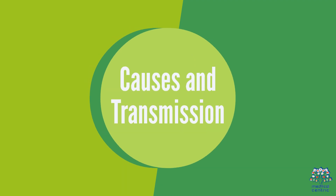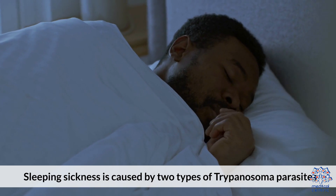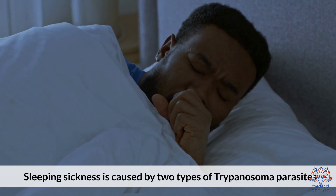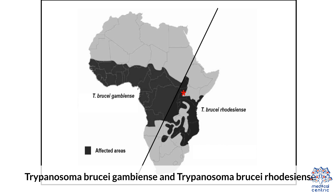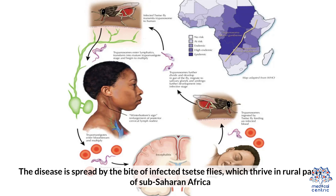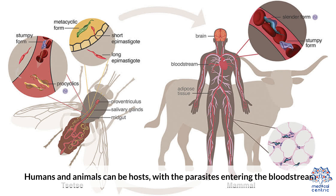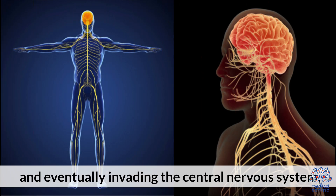Causes and Transmission. Sleeping sickness is caused by two types of Trypanosoma parasites – Trypanosoma brucei gambiense and Trypanosoma brucei rhodesiense. The disease is spread by the bite of infected tsetse flies, which thrive in rural parts of sub-Saharan Africa. Humans and animals can be hosts, with the parasites entering the bloodstream and eventually invading the central nervous system.